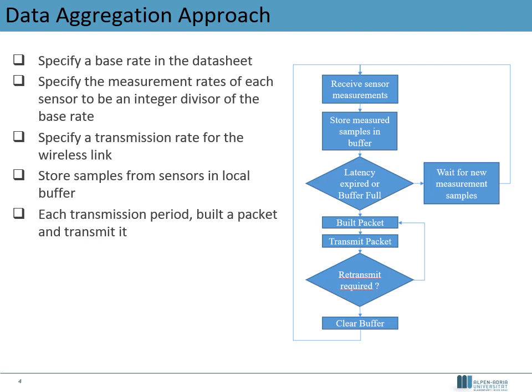The transmission rate for the wireless protocol is defined to be slower than the measurement rate, resulting in a buffer on the transducer in which all measurement samples are stored. The transducer waits for the sensors to measure samples, then stores all samples in the buffer in an ordered fashion so that samples from different sensors can still be differentiated. Each period of the transmission rate, the transducer takes all samples in the buffer and builds a packet, which is then transmitted to the base station with the possibility of a retransmit. After a packet has been successfully built, it is stored in a different memory until successfully transmitted, and the buffer is cleared.